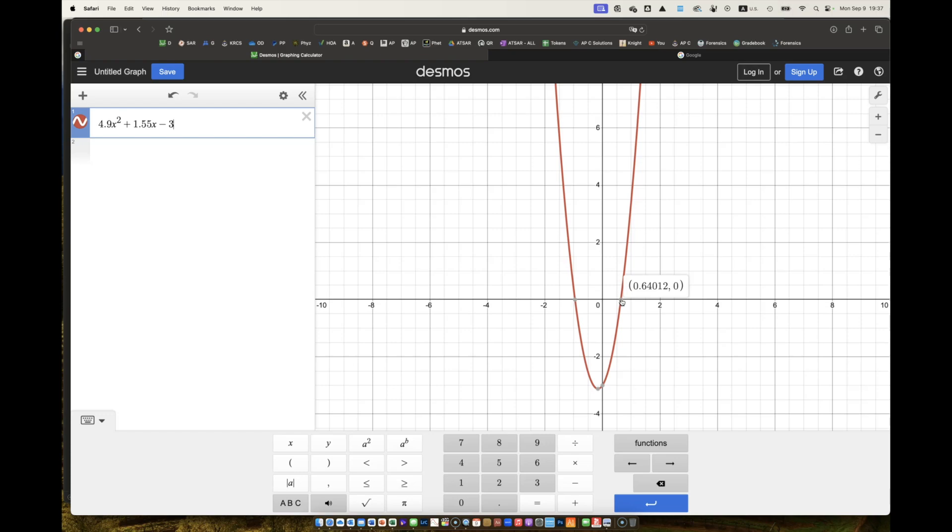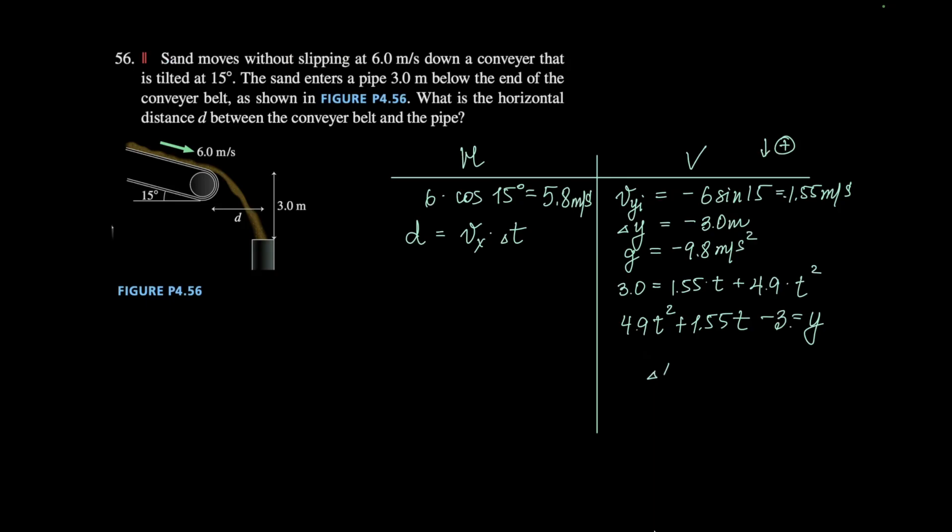That is how long it takes to fall 3 meters with initial velocity of, what is it, 1.55, 1.5, 1.6 meters per second with acceleration due to gravity, which is 9.8.